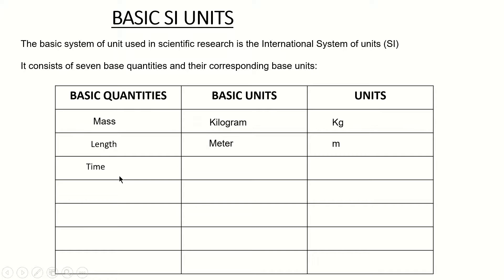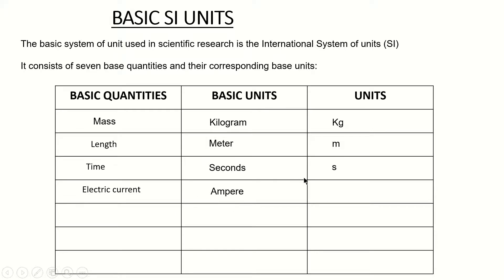Time is also a basic quantity, and the basic unit for time is seconds, with symbol s. The next basic quantity is electric current. The unit of current is ampere and the symbol is capital A.